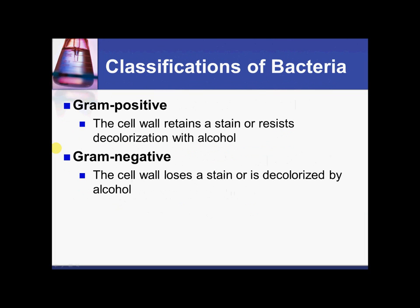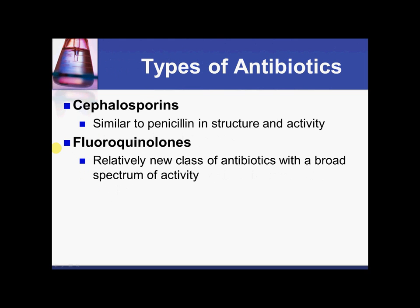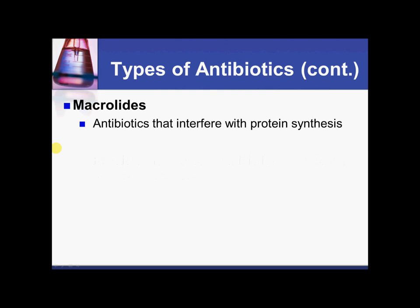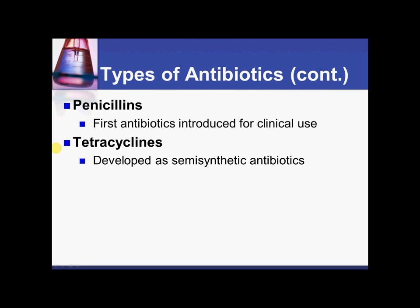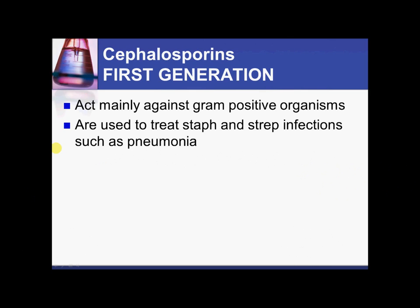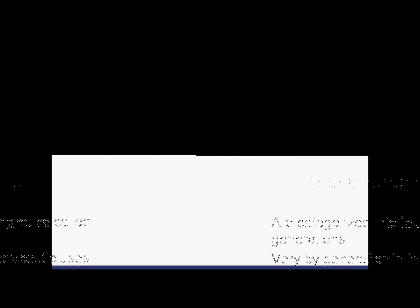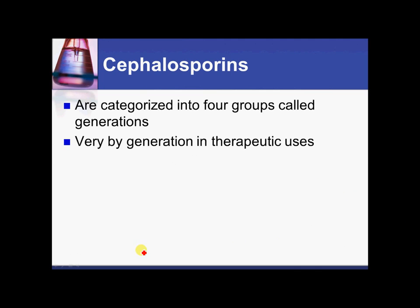To recap: gram-positive bacteria have one cell wall, and gram-negative bacteria have two cell walls — that will be important going forward. We'll be discussing the different classes of antibiotics and how they work in the next session, which is Part 2.